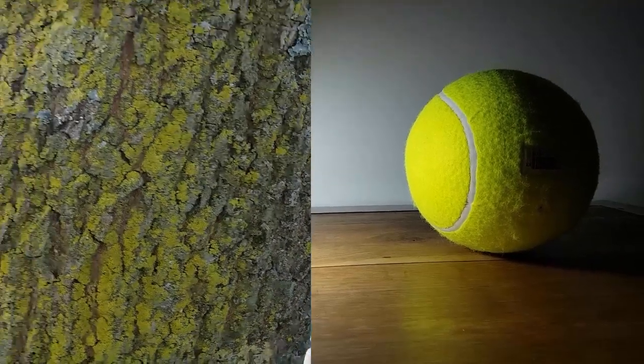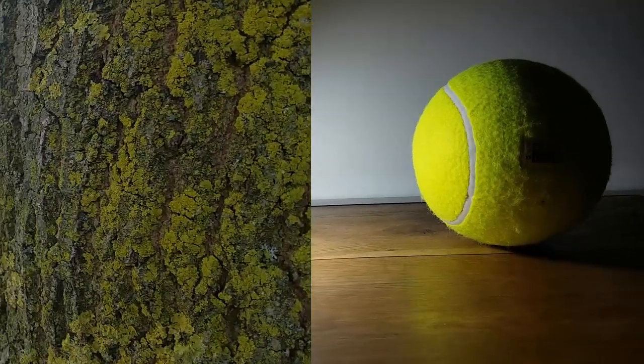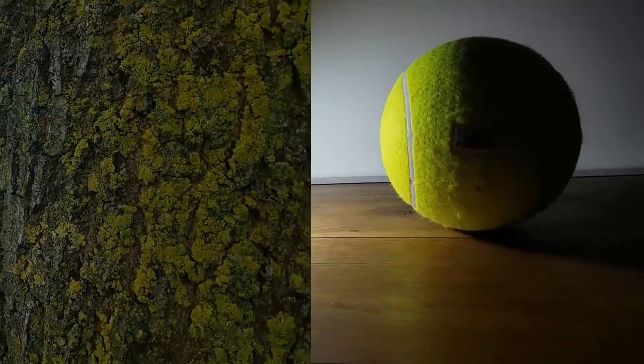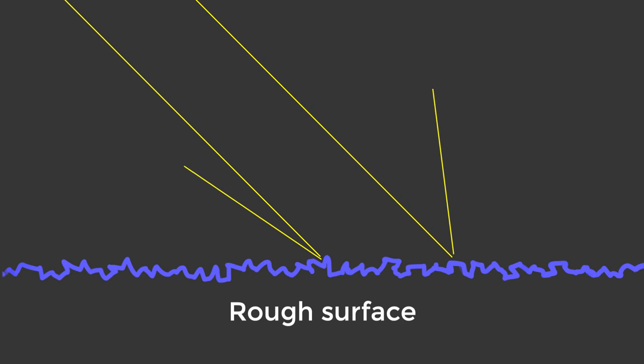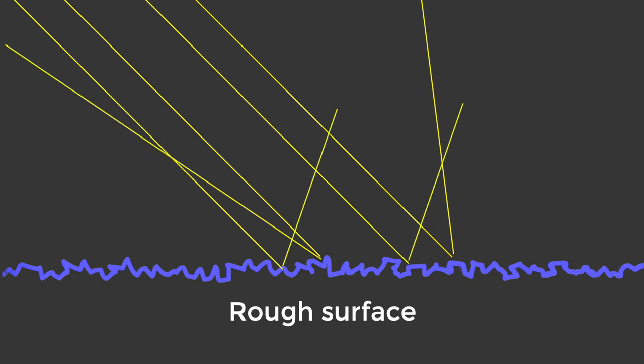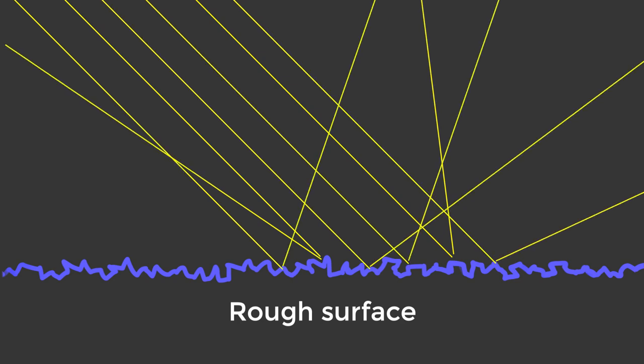A lot of surfaces are not smooth enough to give out a lot of specular reflection. When the surface is rough at that microscopic level the light bounces off in all different directions. Something like a piece of paper seems quite smooth but at that microscopic level it's pretty rough, so most of the reflection on it is diffuse reflection — and a lot of what we see in the world, like my t-shirt or this sofa, we're seeing because of diffuse reflection.